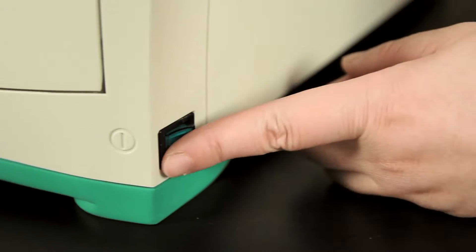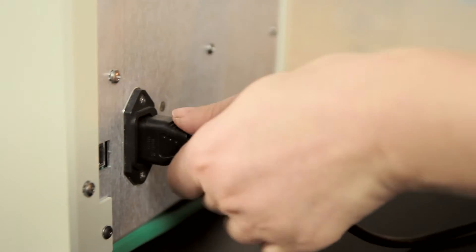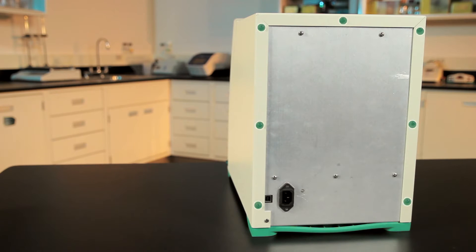To begin, turn off the instrument and unplug it from the power source. Then remove the seven screws around the outside edge of the GelDoc EZ, leaving the screw at the bottom left corner in place.